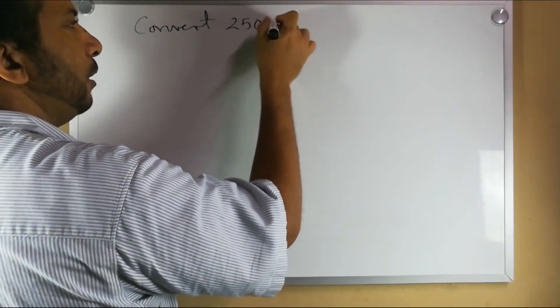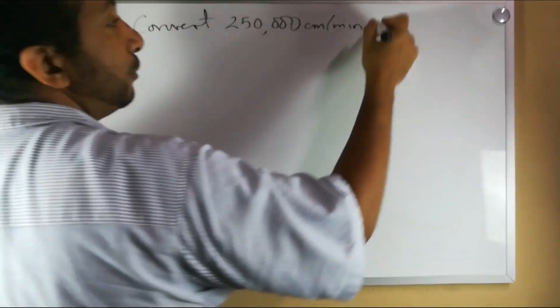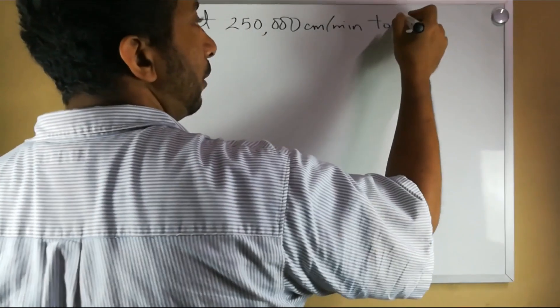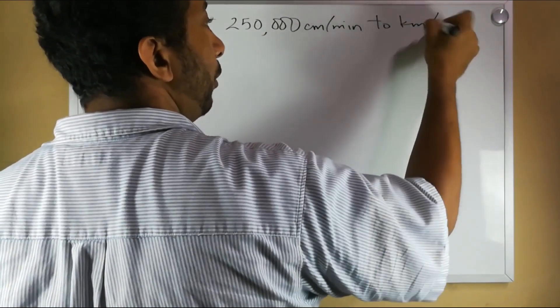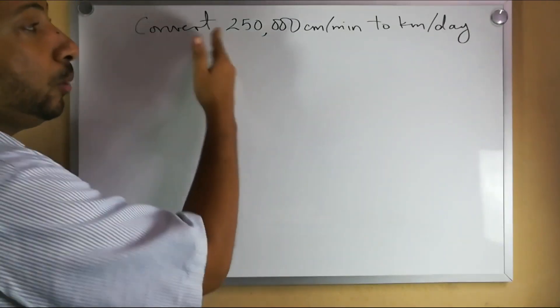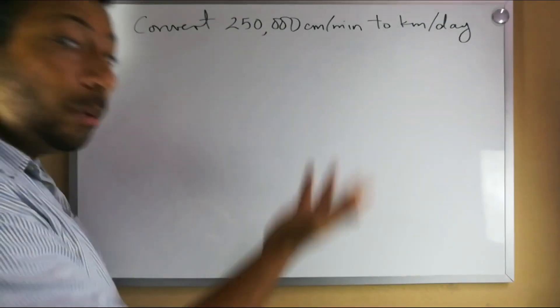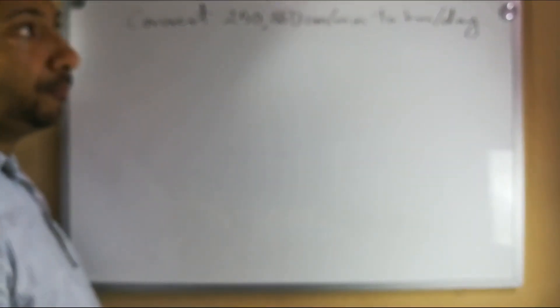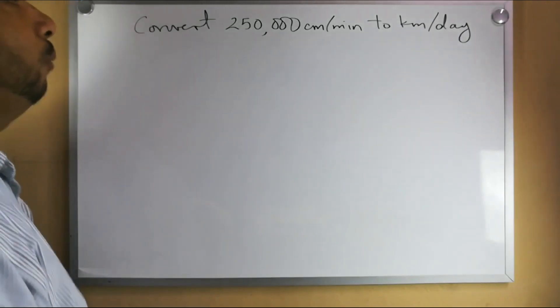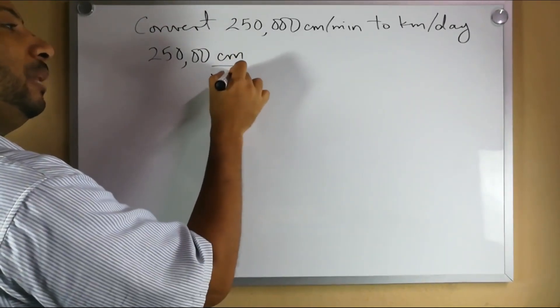Such as converting 250,000 centimeters per minute to kilometers per day. So let's say you have a rocket that is traveling at 250,000 centimeters per minute and you want to know how many kilometers they would travel every day. How do we go about doing that? Well first we write the 250,000 centimeters per minute.